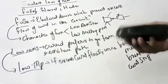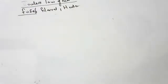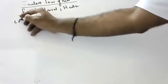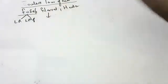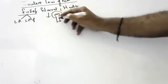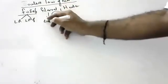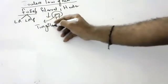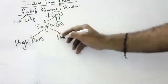Now coming to the filament. In older days, bulbs used to have a filament. The filament is made of tungsten. What are the characters of the filament? High resistance and high melting point.